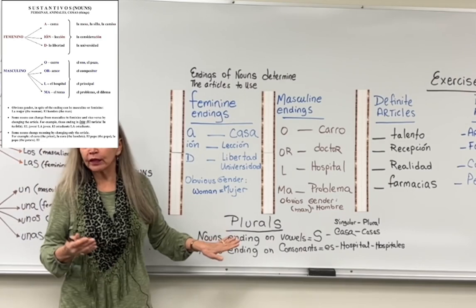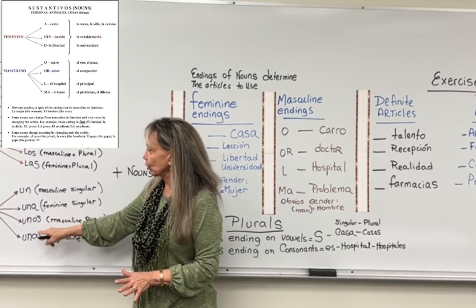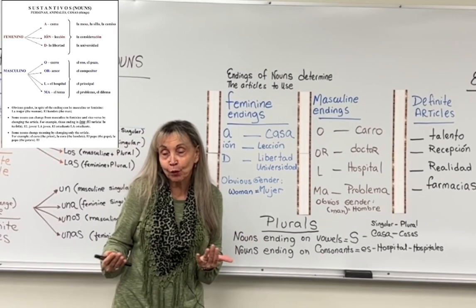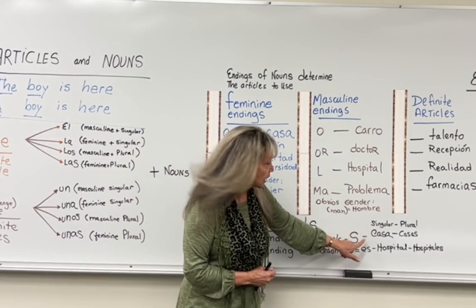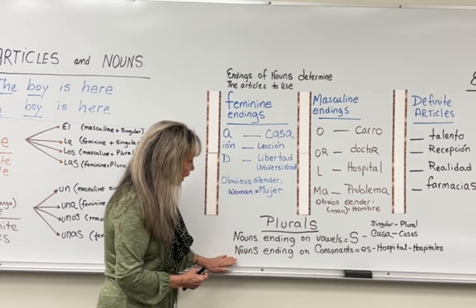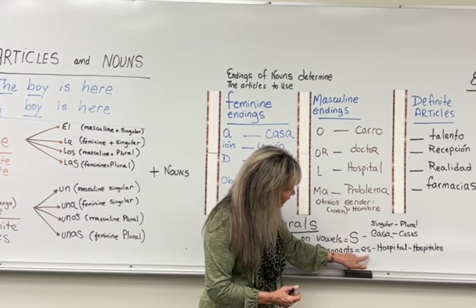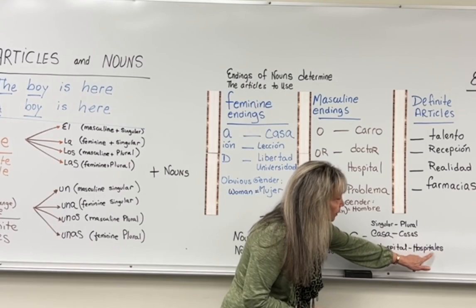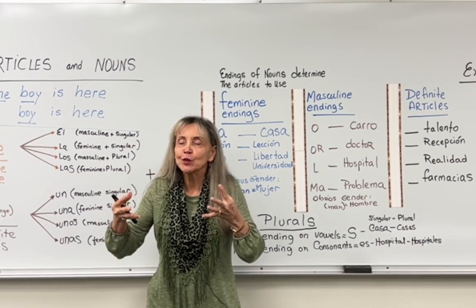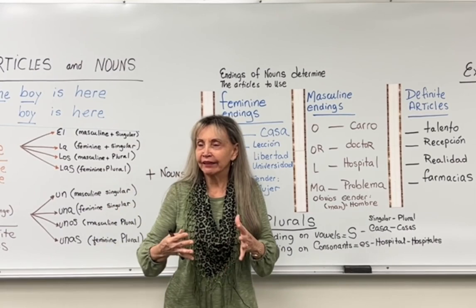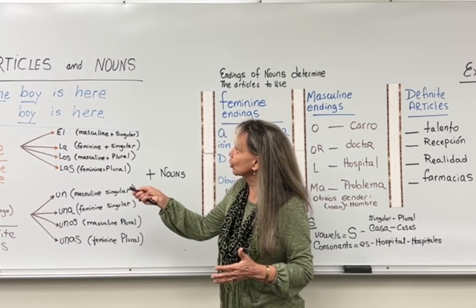We also have the plural articles: los, las, unos, unas. How do you make a word plural? Check the endings again. If the word ends with a vowel, just add an S — such as 'casa' → 'casas.' But if the noun ends on a consonant, then add -es — such as 'hospital' → 'hospitales.' That is, in general, the theory behind articles and nouns — the most basic thing to begin learning and advancing toward building a complete sentence in Spanish.